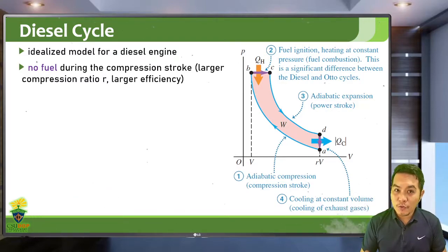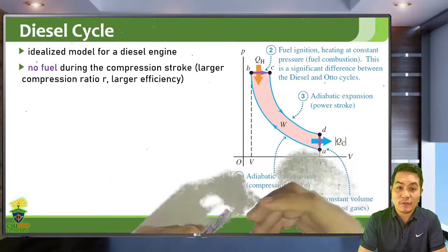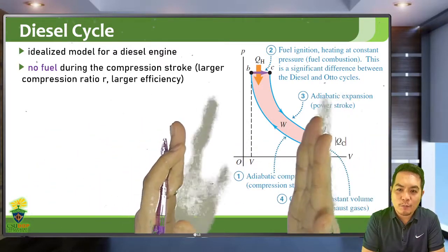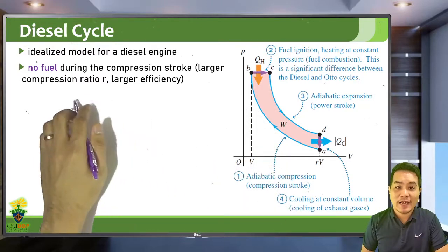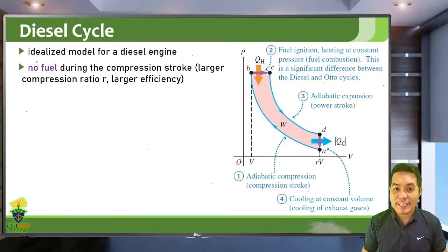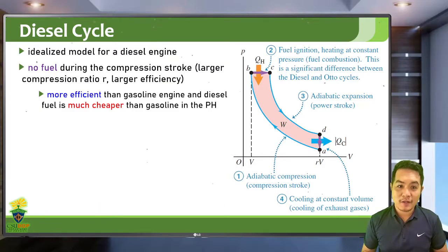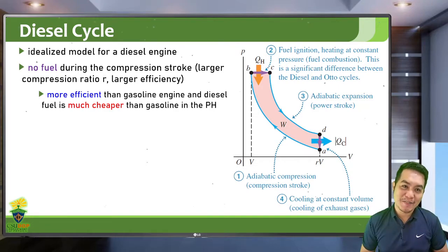Because there is no diesel-air mixture at intake and compression — only pure air — it is easier to compress air to a smaller volume compared to a fuel-air mixture. This gives diesel engines a larger compression ratio r. A larger compression ratio means higher efficiency. Diesel engines are actually more efficient than gasoline engines. In the Philippines, diesel fuel is cheaper because gasoline is more common there, while in other countries diesel is priced higher.